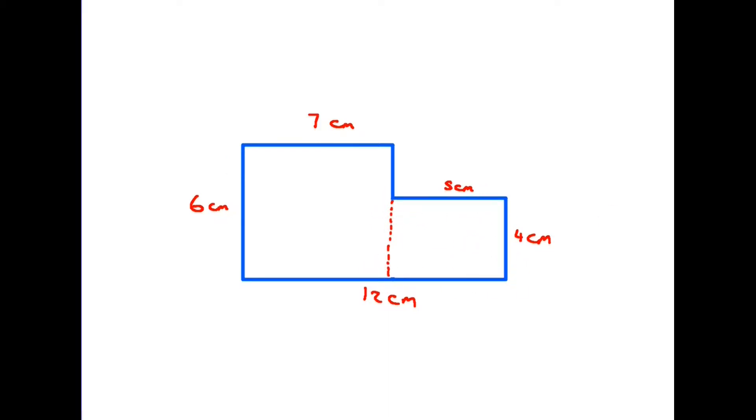So all I need to do is work out the area of the two rectangles. This one is 7 times 6, so that's 42 centimeters squared, and the one on the right is 5 times 4, so it's 20 centimeters squared. For the whole area we simply add 42 to 20 and get 62 centimeters squared.